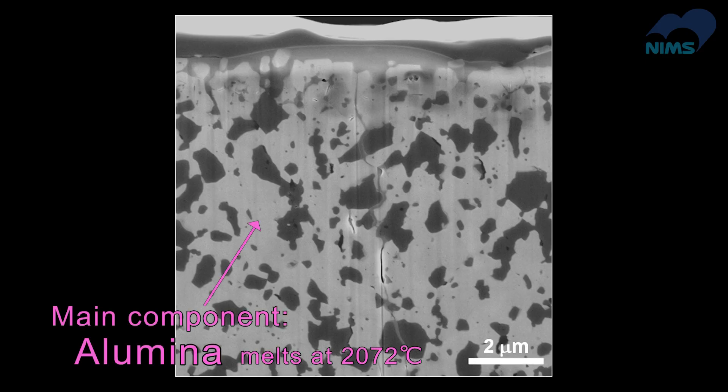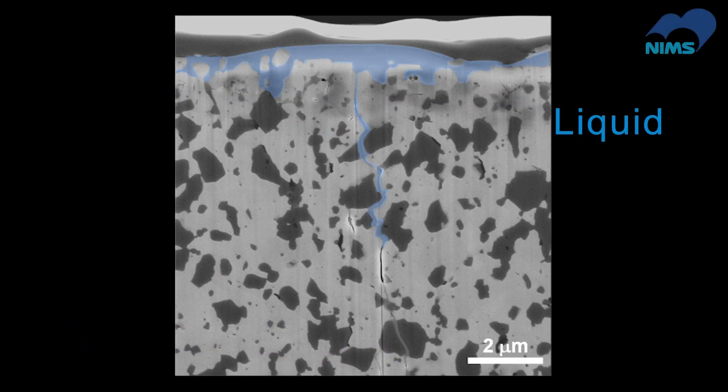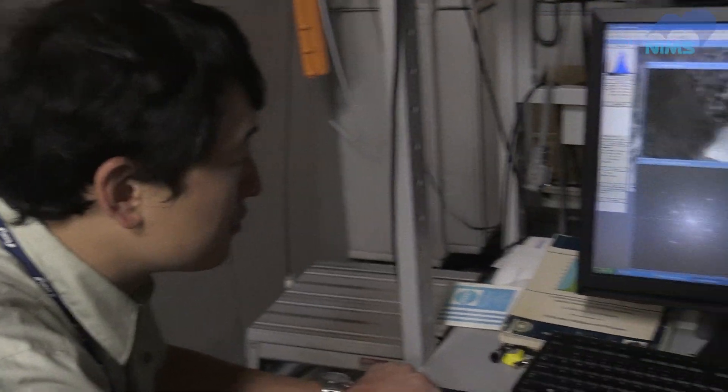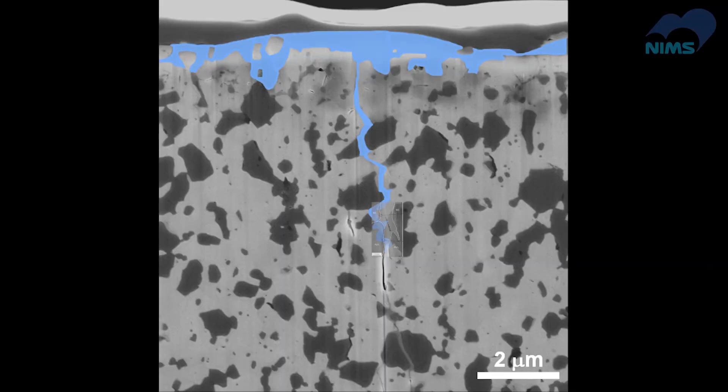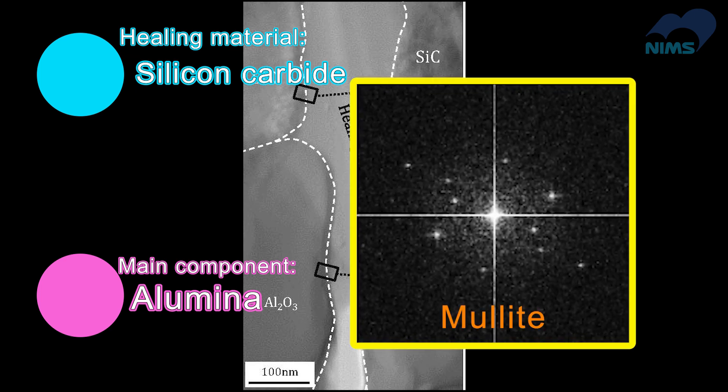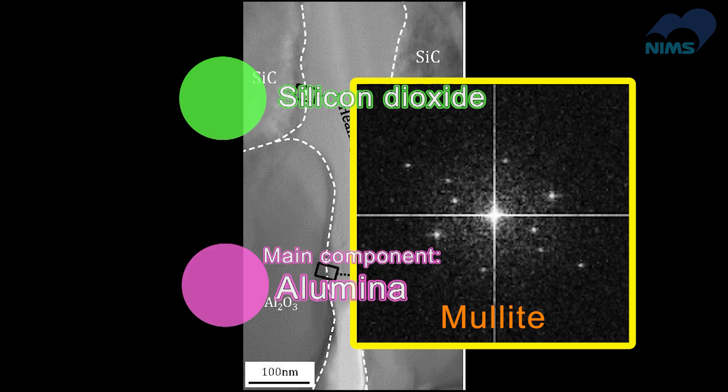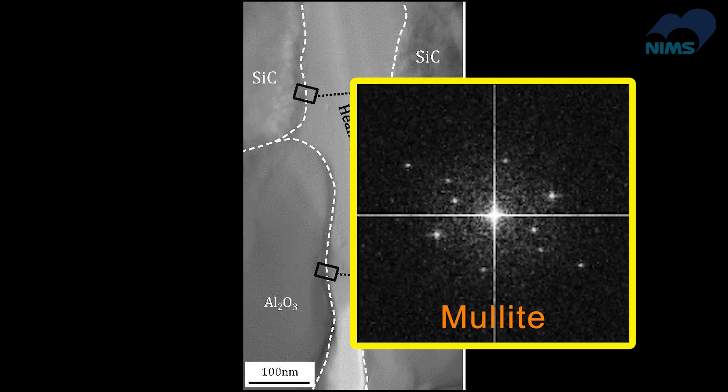However, both alumina and silicon carbide have high melting points, preventing them from melting at 1,000 degrees centigrade. How was the liquid-like substance generated? This photograph provides the answer. The liquid-like substance is composed of mullite, not silicon carbide. This is generated by the reaction between silicon dioxide, produced when silicon carbide oxidizes, and alumina, an unexpected participant in the healing process.